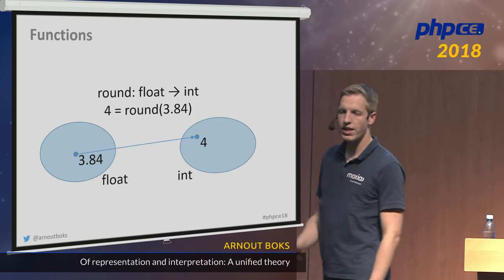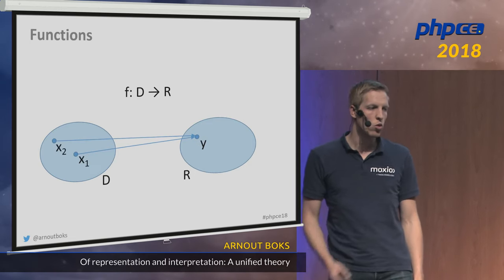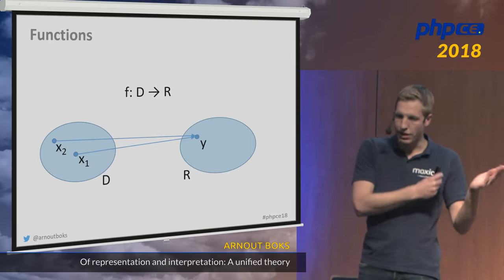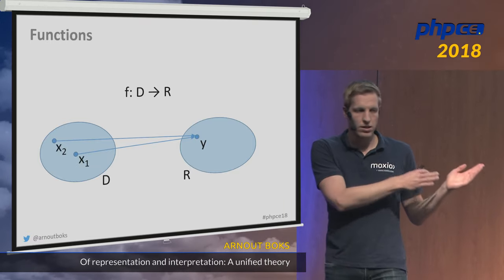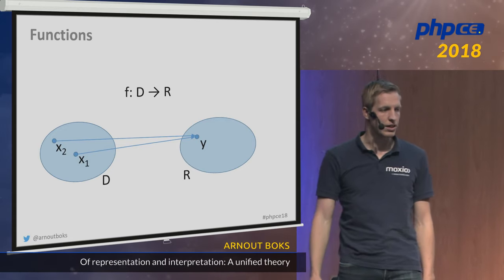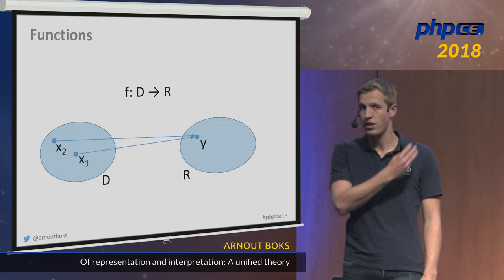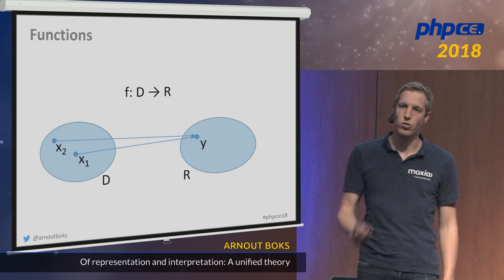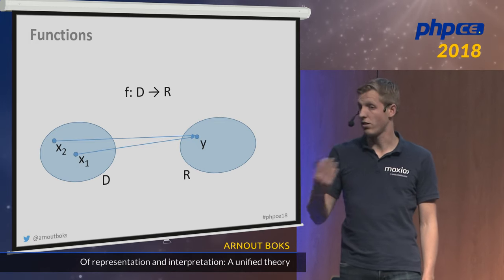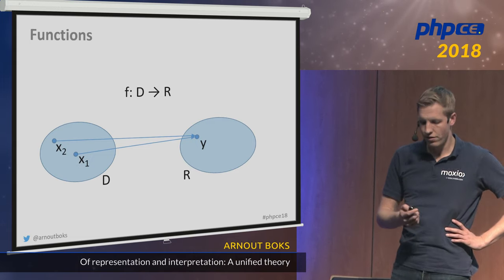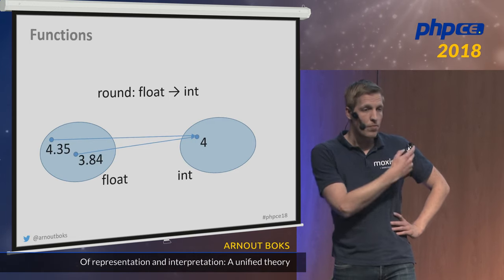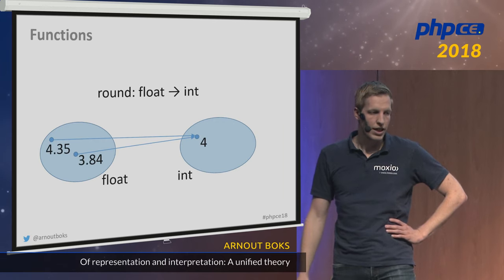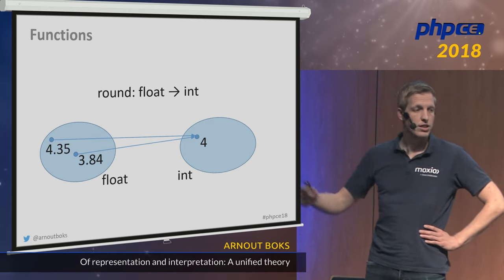This mapping does not have to be one-to-one. We can have two different inputs x1 and x2 that map to the same output value y — this is perfectly legal, and we call such a function 'not injective.' A function for which every input maps to a different output is called 'injective.' For example, with our rounding function, both 4.35 and 3.84 map to the same integer: 4.